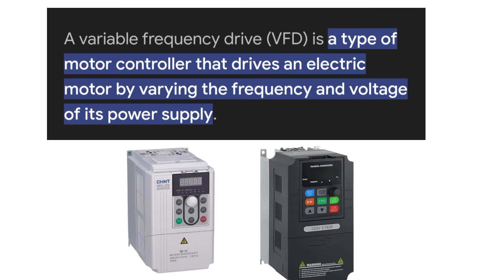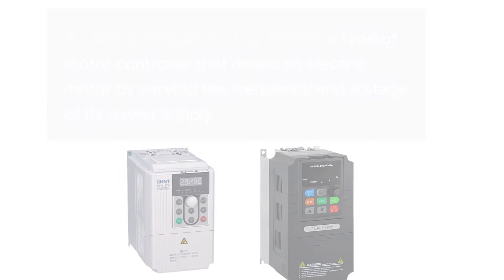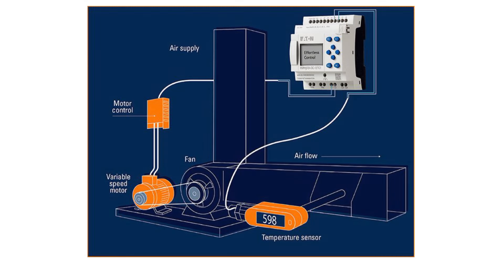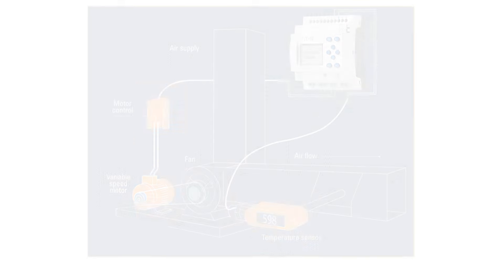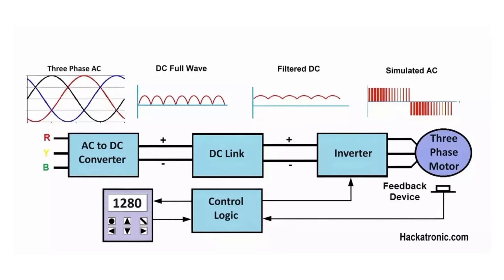VFD stands for Variable Frequency Drive, and it is an electronic device that controls the speed of an electric motor by adjusting the frequency of the electrical power supplied to the motor. Now let's talk about the working principle of VFD — there are four steps to control the motor.